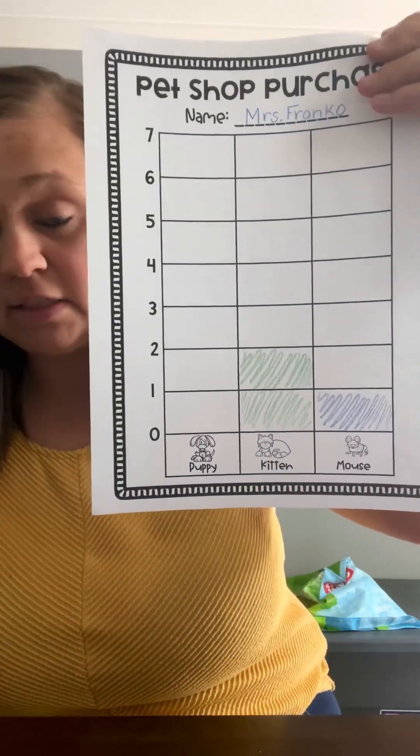Now it would be the next student's turn. They would get to go three times because it's going to be a total of 15 times. For time's sake I'm just going to color in some boxes to get to 15. We'll do two, three, four puppies, five kittens, and we'll do five more mice.